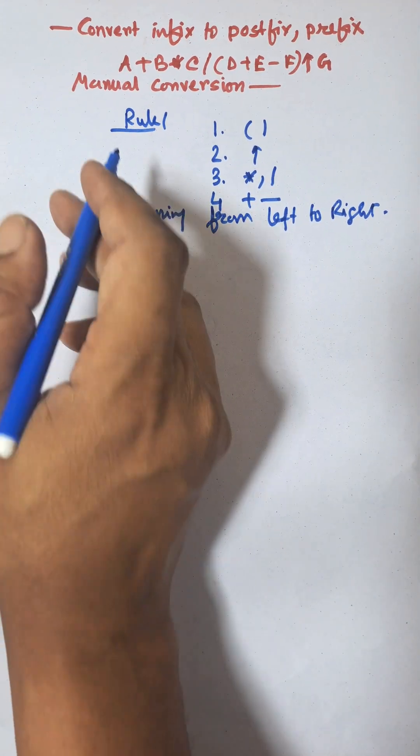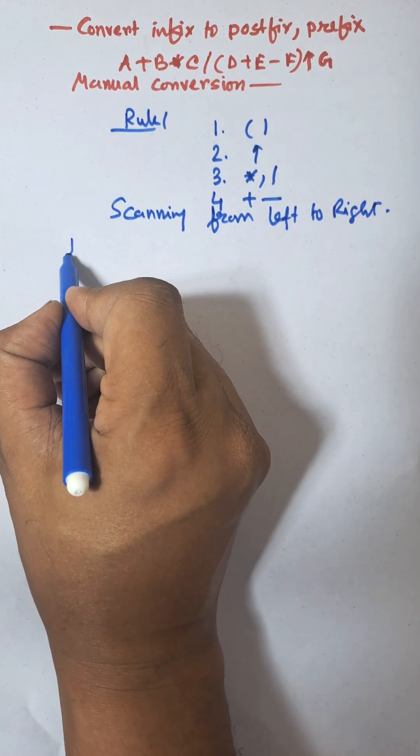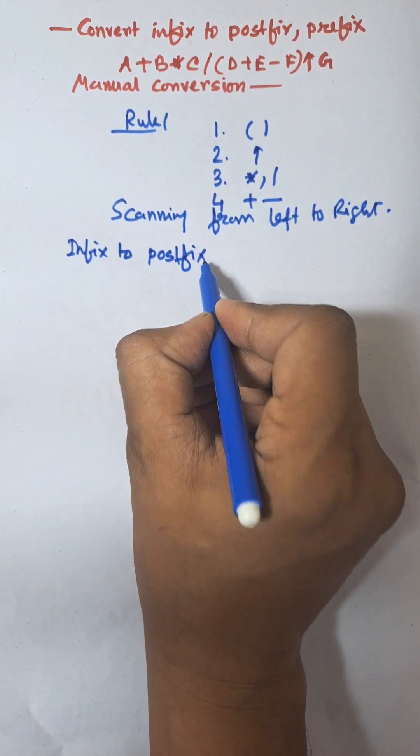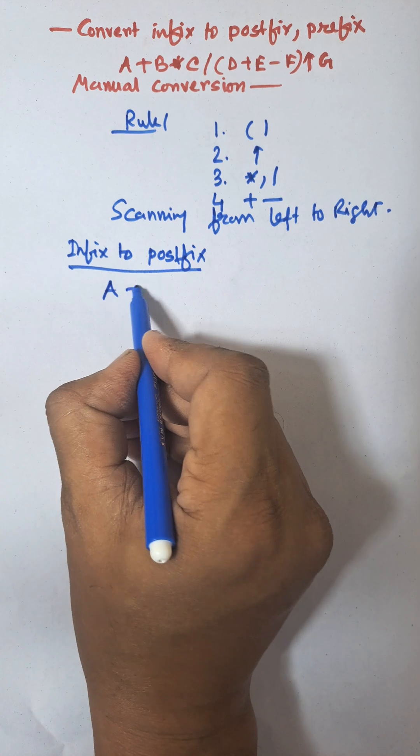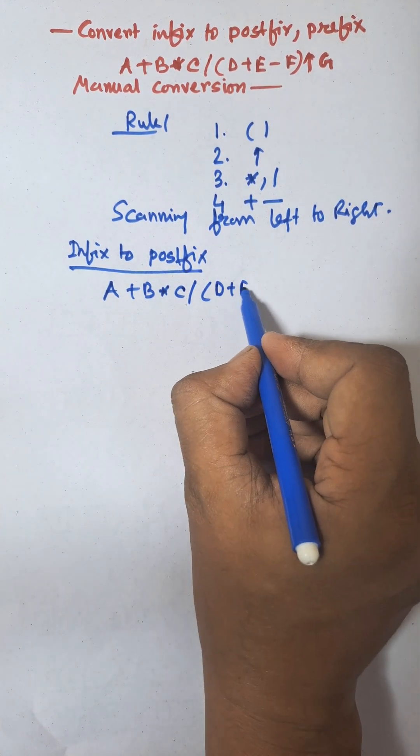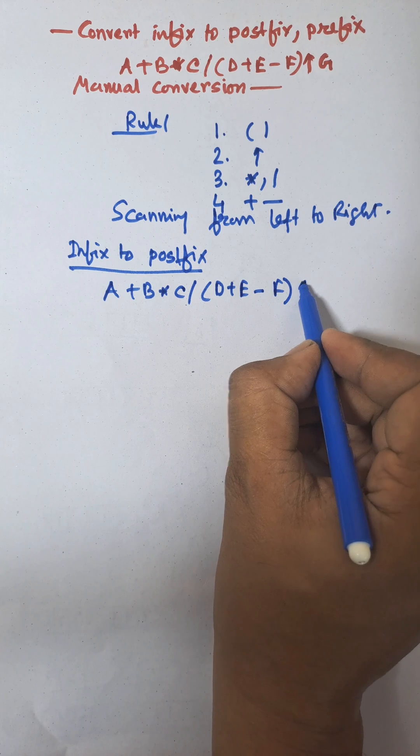So, first expression is infix to postfix. I need to convert infix to postfix. A plus B into C divided by open bracket D plus E minus F close bracket minus A exponential G.